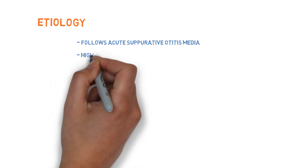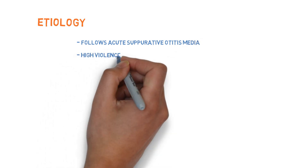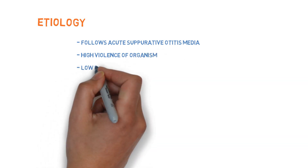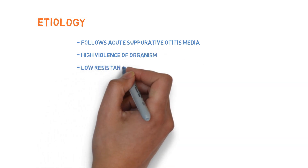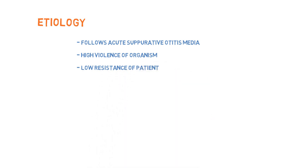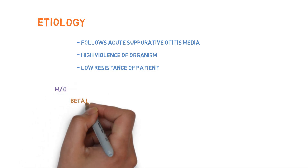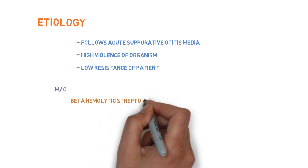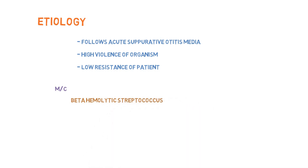The determining factors may be high virulence of the organism, or there may be low resistance of the patient due to diseases like measles, poor nutrition, or associated systemic diseases such as diabetes. The most common causative organism for acute mastoiditis is beta-hemolytic streptococcus.